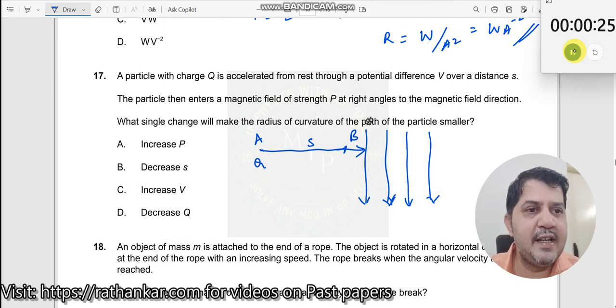And the particle enters. The moment it enters, what will happen? It will describe a circle. And what single change will change the radius of curvature of the path of this particle?